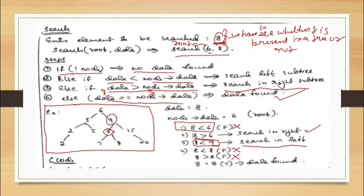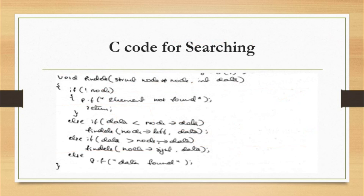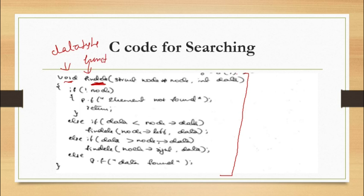So this is the algorithm for searching in a binary search tree. We write the C code based on the algorithm itself. The function is called find_element. Void is the data type, find_element is the function name. It takes struct node star node — the node value keeps changing starting from the root — and int data, which is the fixed data we are sending. In the last example we passed 8 as data and 6 as the root.